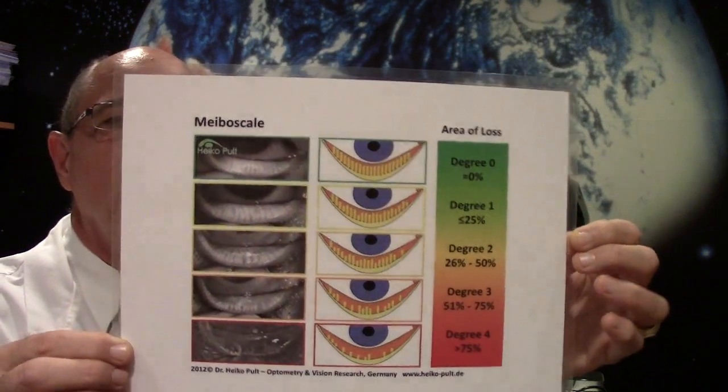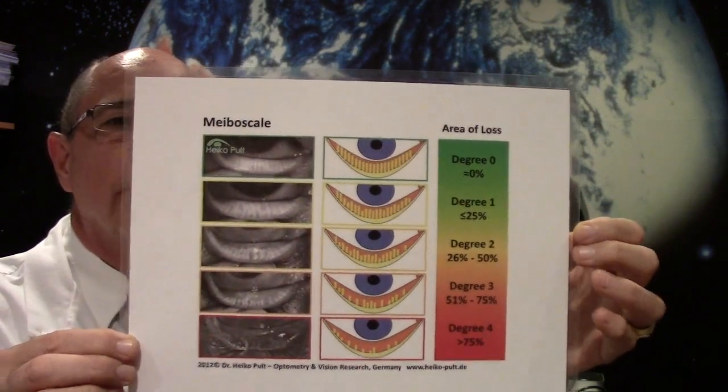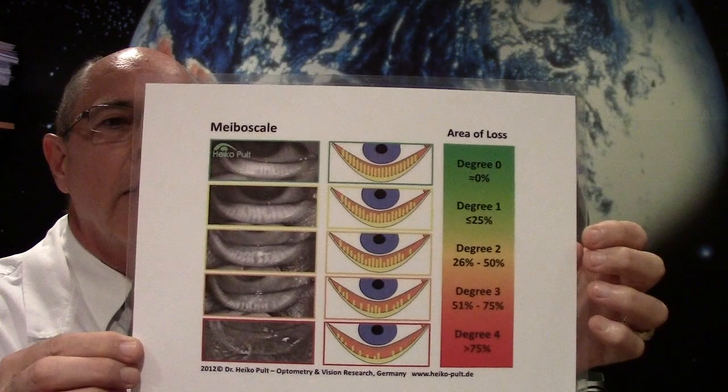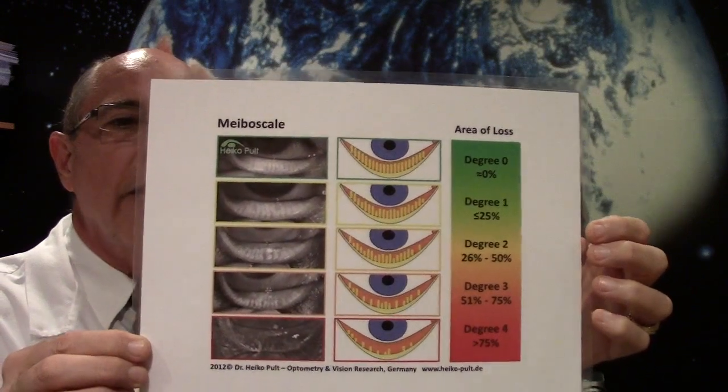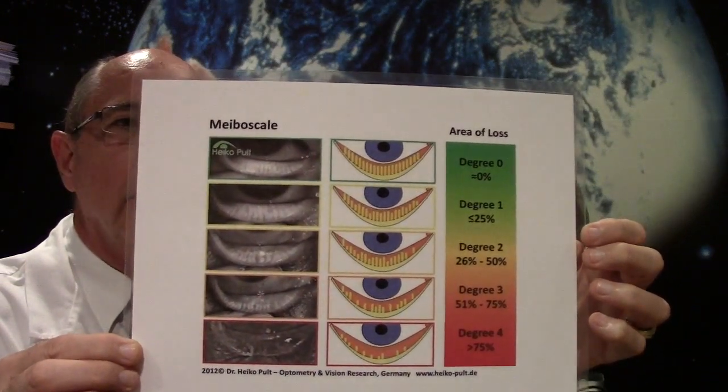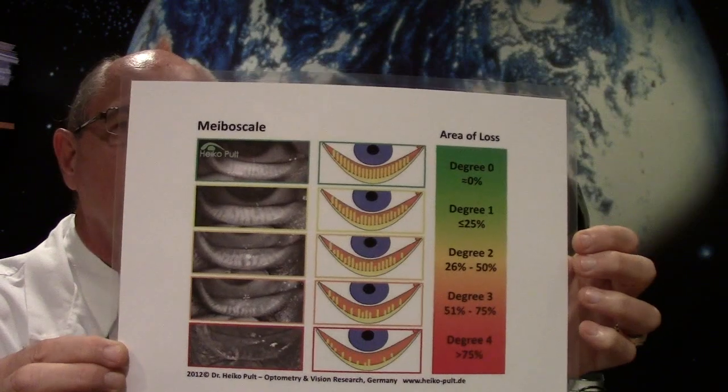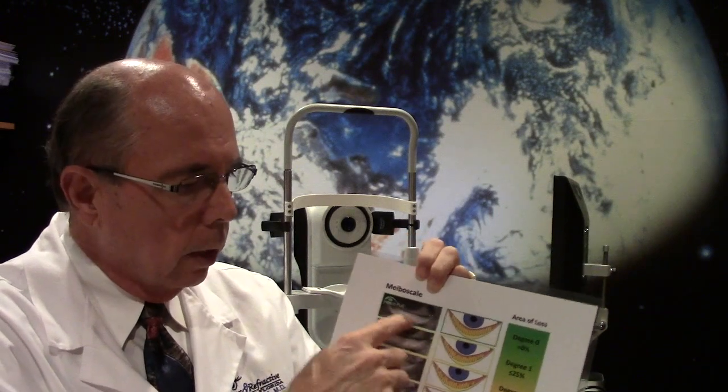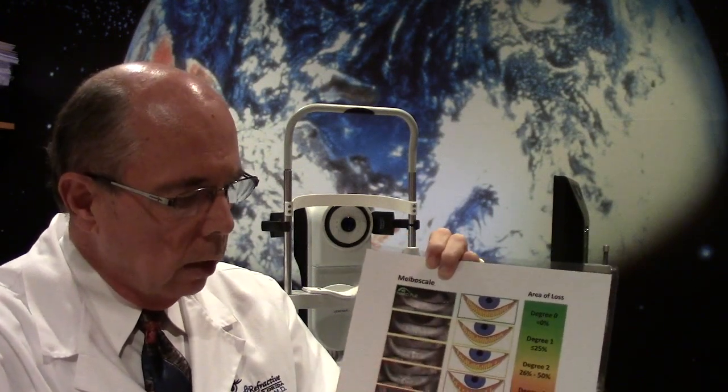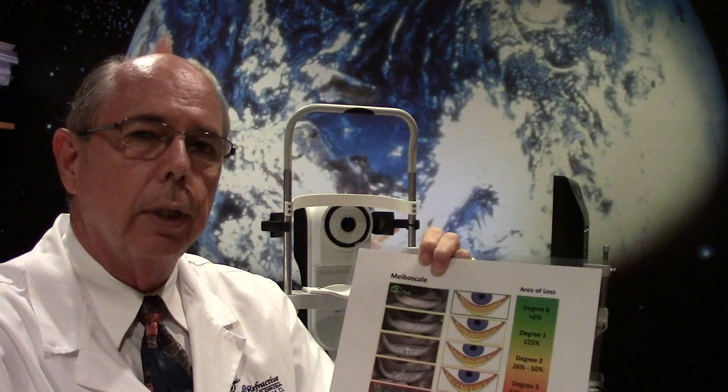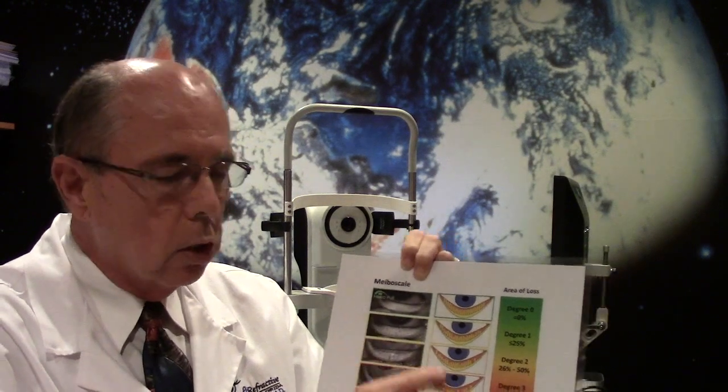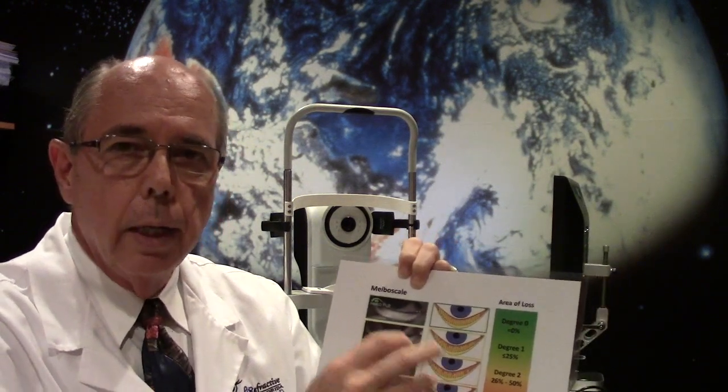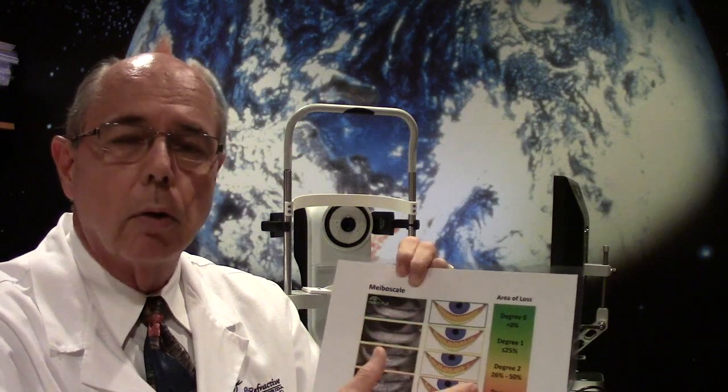This shows you on the left-hand side of the photograph an image of the meibomian glands in the lid and in the middle is just a picture. When we look at these glands they're normal at the top and all the glands are visible. They gradually go down due to chronic inflammation over years of time. These glands start scarring and closing down and getting shut where they no longer function.